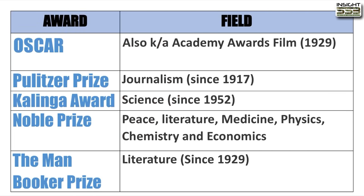First, let's talk about awards and their fields — very important. The Oscar is related to film. Questions come directly asking what Oscar is associated with, so: Oscars are given for film-related work. The first time Oscar was given was in 1929. We will discuss only which fields are associated with major awards.